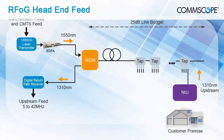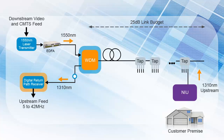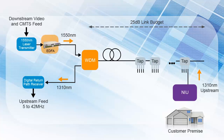In an RFOG architecture, a single fiber supports both the forward and return path. Using WDM, Wavelength Division Multiplexing, downstream signals are transported over 1550 nanometer wavelengths and upstream signals use 1310 nanometers. The optical path can be a node design or a head-end feed design. In the head-end feed design shown here, the downstream video and CMTS cable modem termination system feeds are input to a 1550 laser transmitter and the output is fed into the EDFA, erbium-doped fiber amplifier for amplification prior to entering the optical WDM module. The WDM module provides the combination and separation of the 1550 nanometer downstream and 1310 nanometer upstream signals.